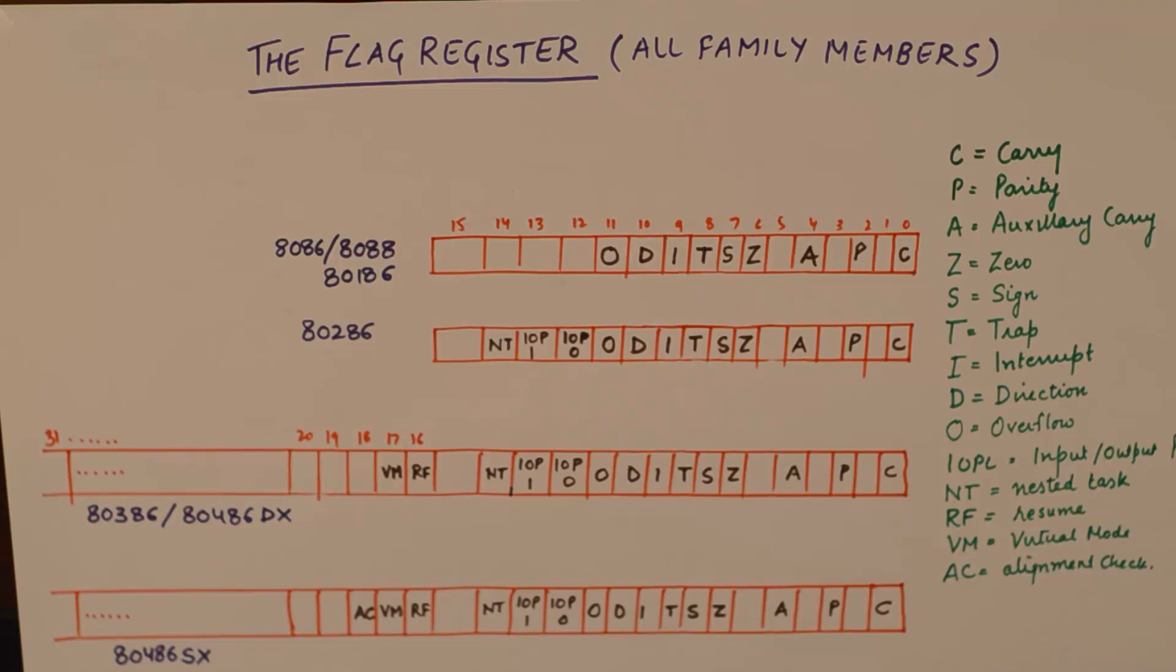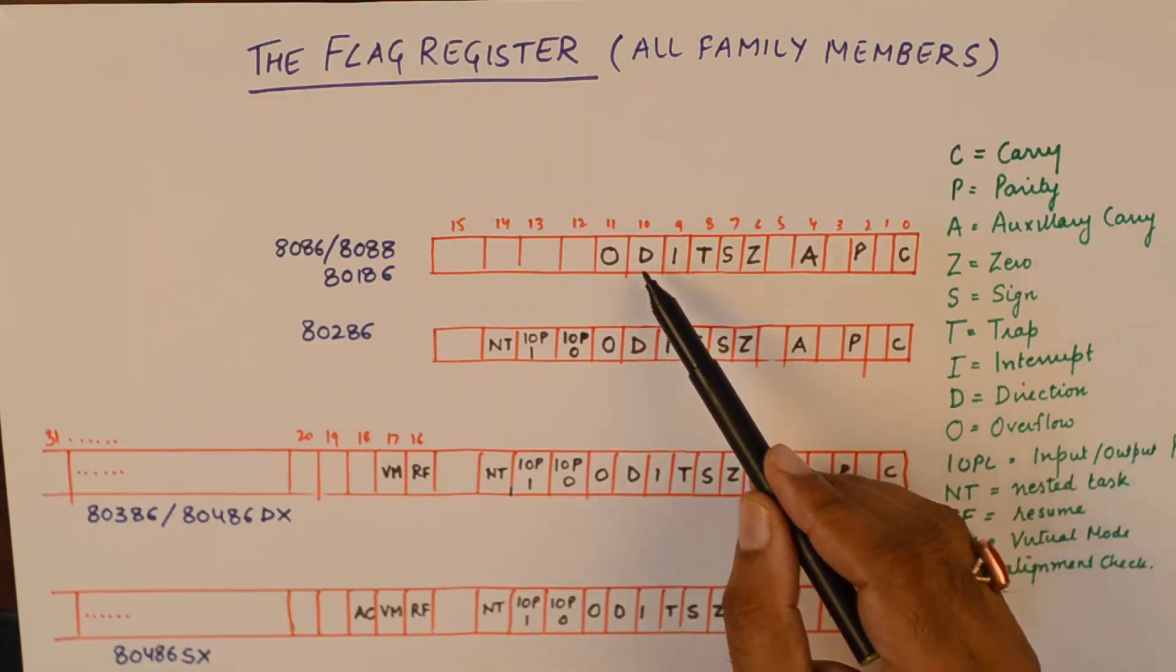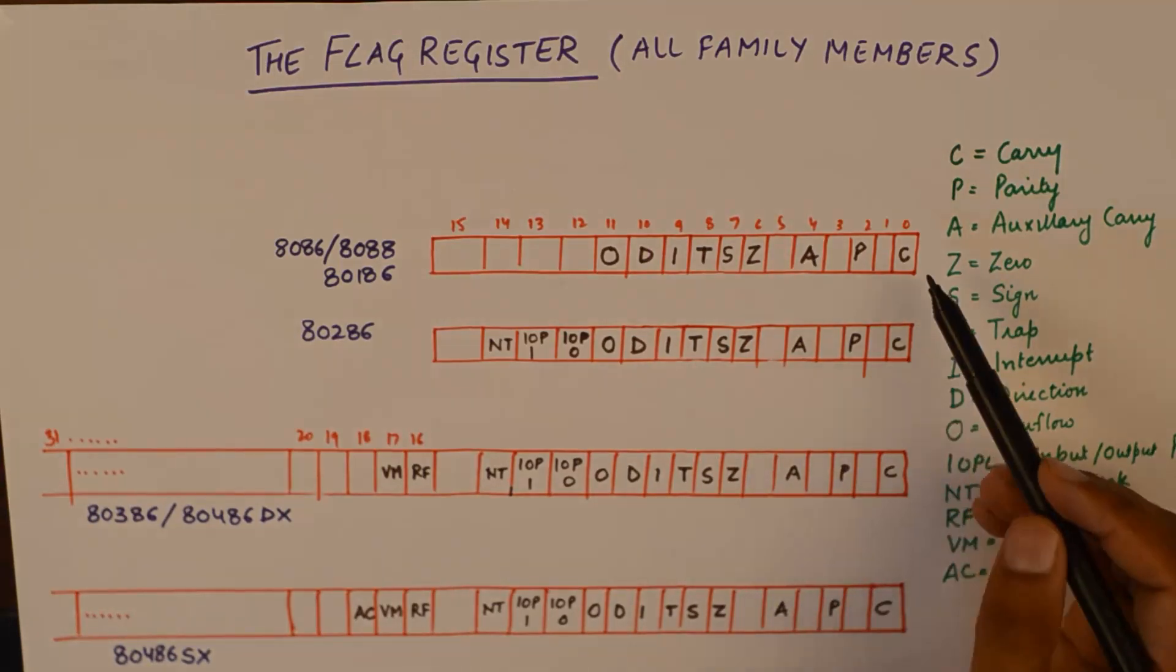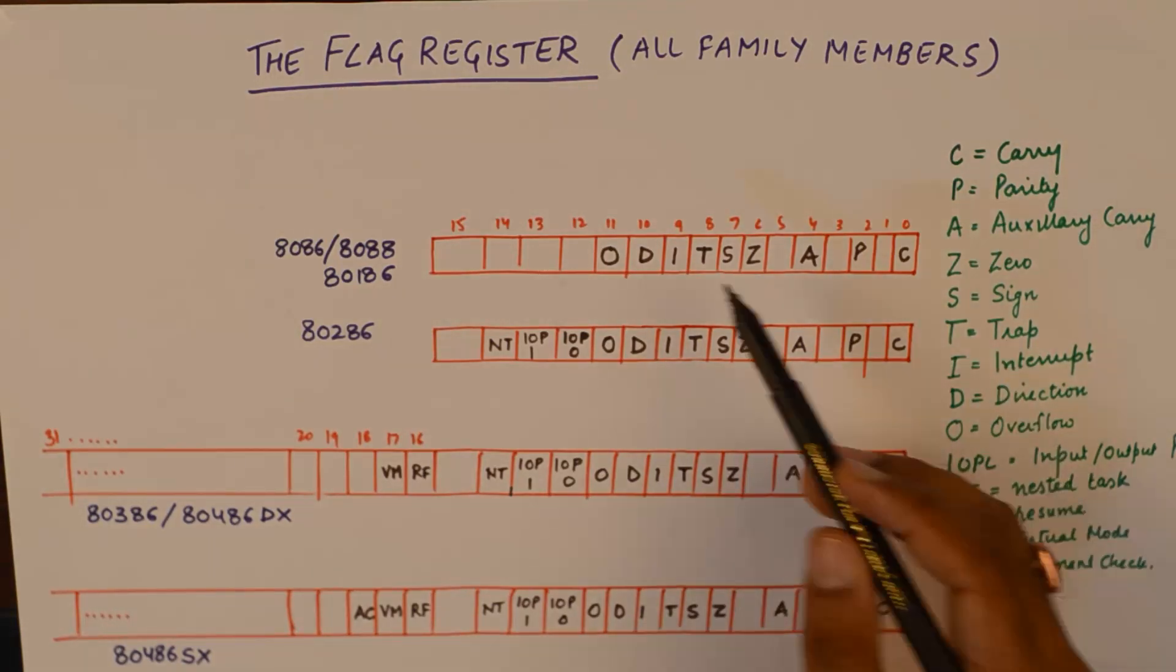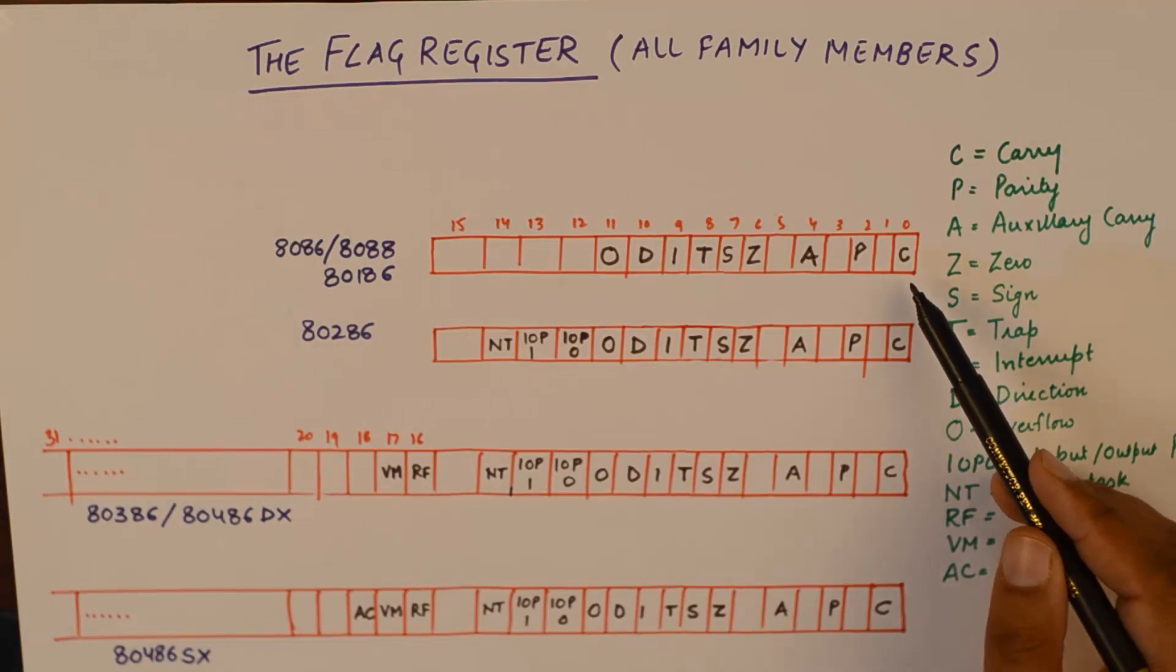We all know that 8086, 8088, and 80186 are 16-bit microprocessors, but the mentioning of 16-bit microprocessor has got nothing to do with the size of the flag register. The size of the flag register is 16-bit in 8086. The reason for that is we have 10 flags in 8086. As you can see, we have carry, parity, auxiliary carry, zero, sign, trap, interrupt, direction, and overflow flags here.